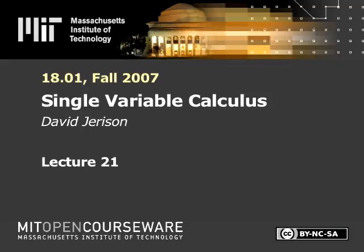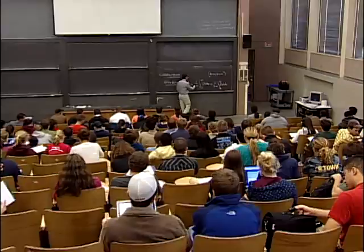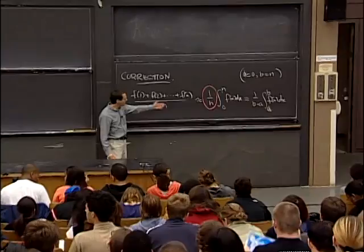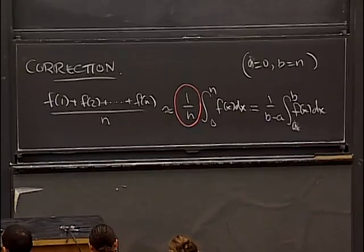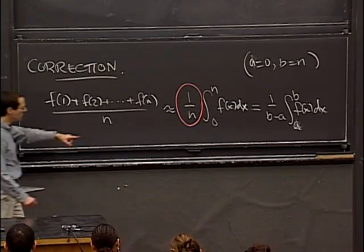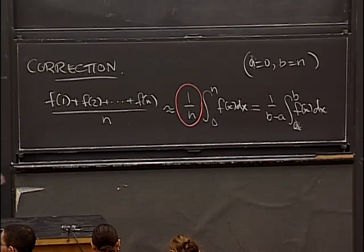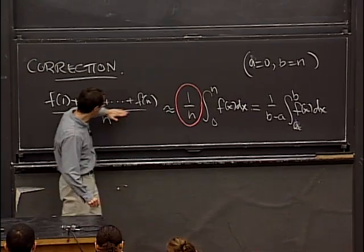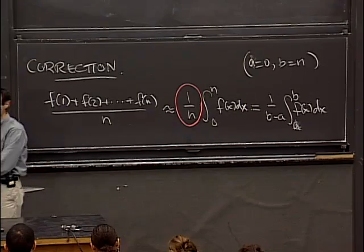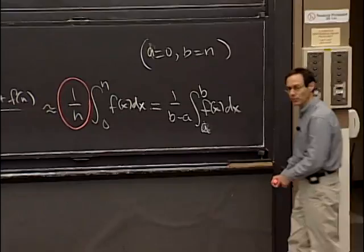One correction from last time. I forgot a very important factor when I was telling you what an average value is. If you don't put in that factor, it's only half off on the exam problem. So I would have gotten half off for missing out on this factor too. Remember, you have to divide by n here. Certainly when you're integrating over 0 to n, the Riemann sum is the numerator here. And if I divide by n on that side, I've got to divide by n on the other side.